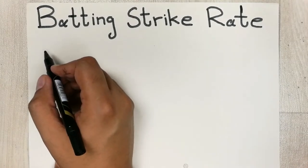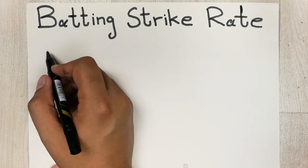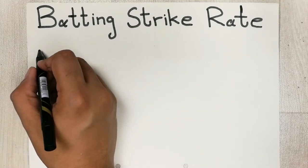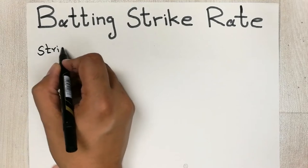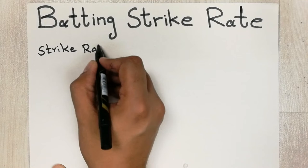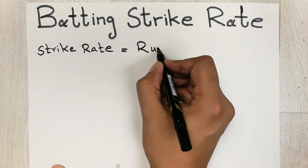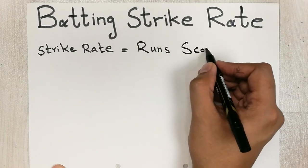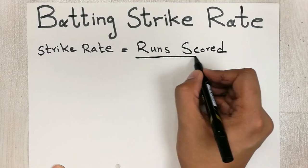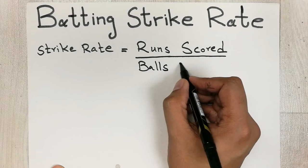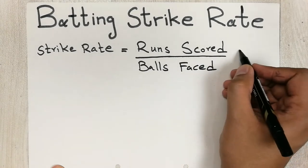Hello guys, I hope you are doing really well. In today's video I am going to show you how to calculate the batting strike rate in cricket. There is a very simple formula: Strike Rate = (Runs Scored / Balls Faced) × 100.